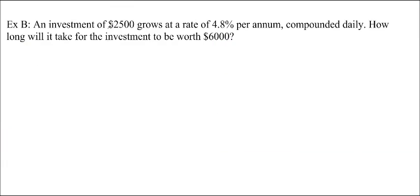So this one is an investment. Investment of 2,500 grows at a rate of 4.8% per annum compounded daily. So what that means is that our P, our principal, is going to be 2,500. Our interest is not going to be 0.048, but it's actually going to be 0.048 divided by 365. That's because we're compounding daily. If we were compounding monthly, we'd put a 12 here. If we were compounding semi-annually, we'd put a 2 here, and so forth, depending on how often per year we would get it. And we also have the amount that we want to have at the end is 6,000.